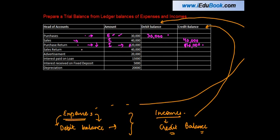Sales return: sales is an income. If a sales return happens, the customer returns the goods back to us, and we receive a lesser amount — lesser amounts means lesser credit, which is done by a debit of 40,000. Advertisement is again an expense of 20,000.